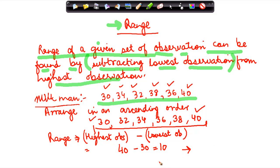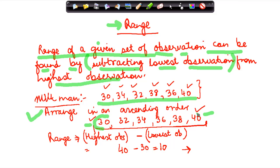Similarly, you can easily find the range of any set of observations by following a two-step process. First, put them in ascending order. Second, find the highest and the lowest — which is easier in ascending order — and then subtract the smallest from the highest. That gives you your range.